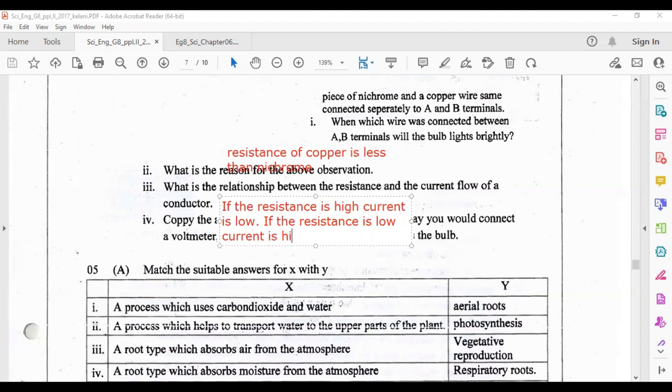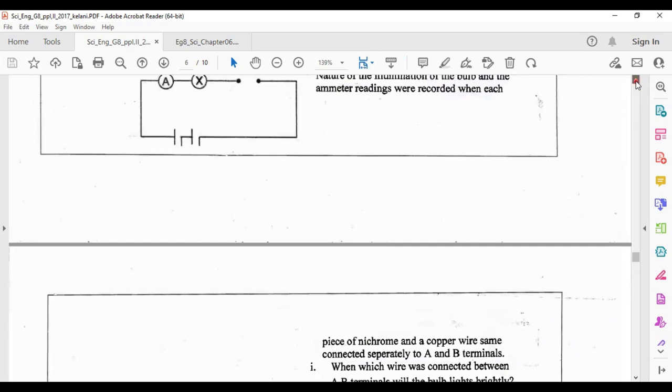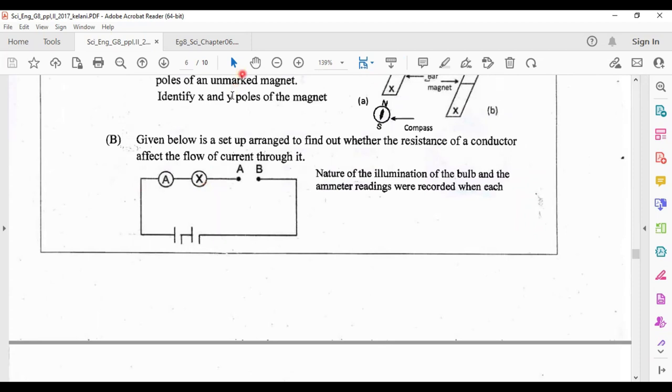Copy the above circuit diagram and draw how you would connect the voltmeter to measure the potential difference across the bulb. If you want to measure the current, you have to connect the ammeter in series to the bulb. But if we want to measure the voltage, then you have to connect the voltmeter parallel to this bulb. Then you have to draw it like this, letter V parallel to the bulb.